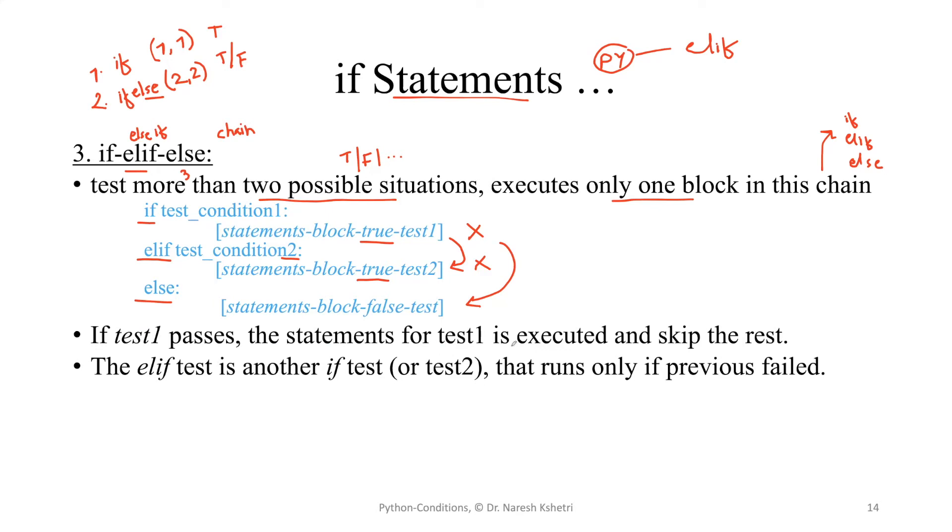If the test one passes the statement for test one is executed means the true block over there is executed and rest is skipped means we don't go over the other condition these other two.